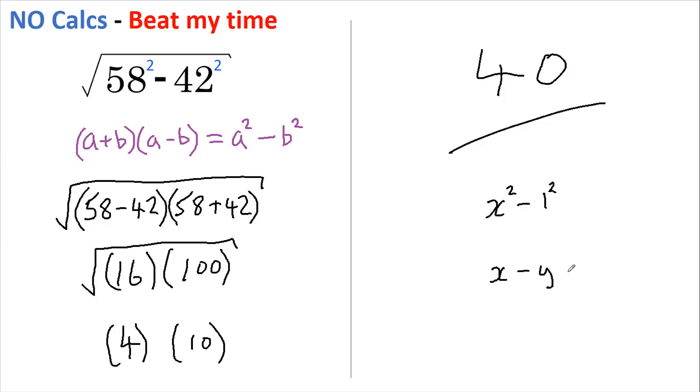which isn't a difference of two squares, you can take the square root of each and then square each, and that is now a difference of two squares. Couple of quick tips for you there. Hope that helps. Hope you beat my time—I'd love to know in the comments below. See you next time.